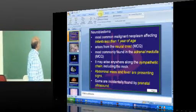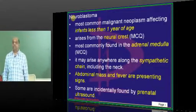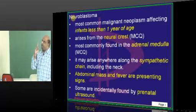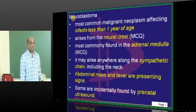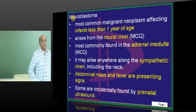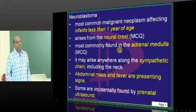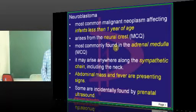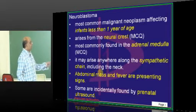Neuroblastoma — if asked in MCQ, the most common malignant neoplasm in infants less than 1 year of age — you should answer firmly that it is neuroblastoma. It arises from the neural crest, very commonly from the adrenal medulla, and anywhere along the sympathetic chain, including the neck.